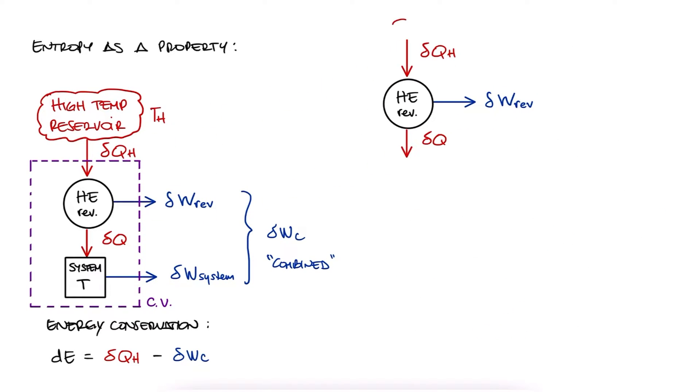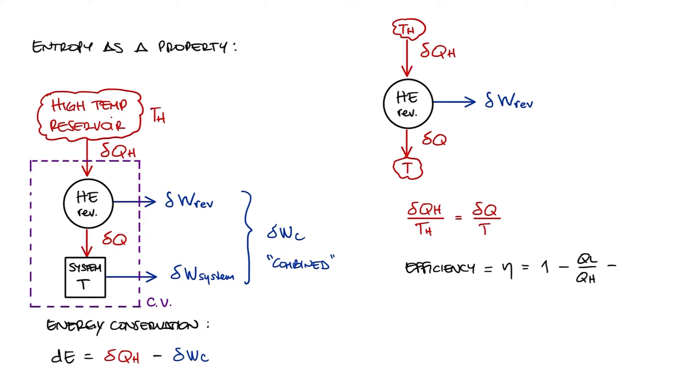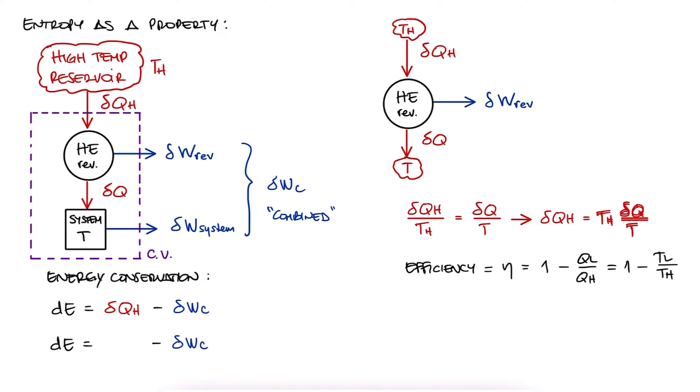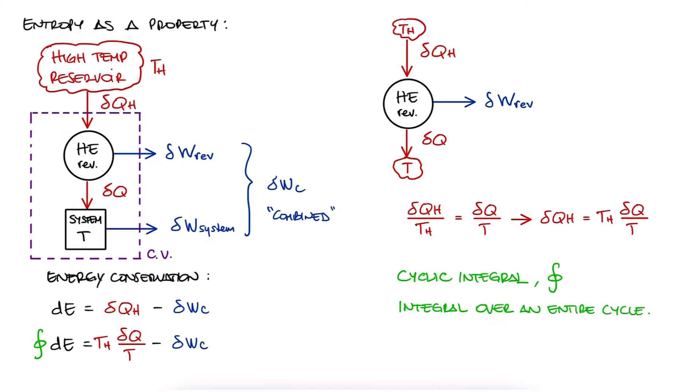Because the heat engine is reversible, we know that delta QH over TH is equal to delta Q over T. Remember that we derived this expression and even used it in the expression for efficiency during the last lecture? From this, we can substitute delta QH with TH delta Q over T. If we define a cyclic integral as the integral over the entire cycle, and we take the cyclic integral of the left-hand side, since the substance returns to the same initial state after one cycle, this term would be equal to zero. On the right, we'd have the cyclic integral of TH dQ over T and of delta WC, which is just WC. And since the reservoirs usually maintain their temperature, TH is constant and can be taken outside of the integral.